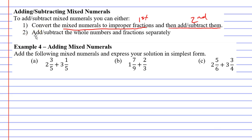I actually prefer method two because when you use method one and convert mixed numerals to improper fractions, you get these really large numerators and it makes it very difficult to add and subtract. Method two says that we need to add or subtract the whole numbers and the fractions separately. I'm going to show you what I mean as we do example four.